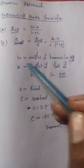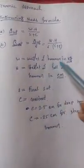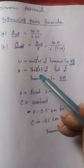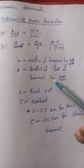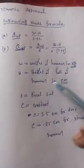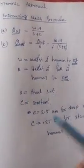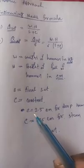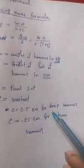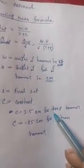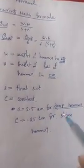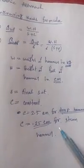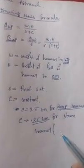Where W equals the weight of the hammer in kg, H equals the height of fall of the hammer in centimeters, S is the final set, and C is a constant. The value of C is 2.5 centimeters for the drop hammer — this is very important — and 0.25 centimeters for a steam hammer, whether it is single acting or double acting.